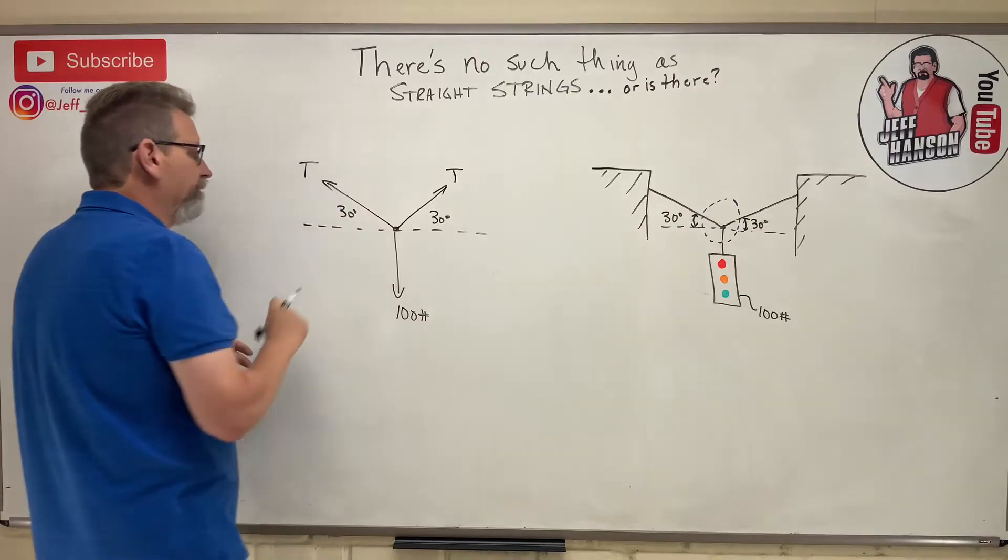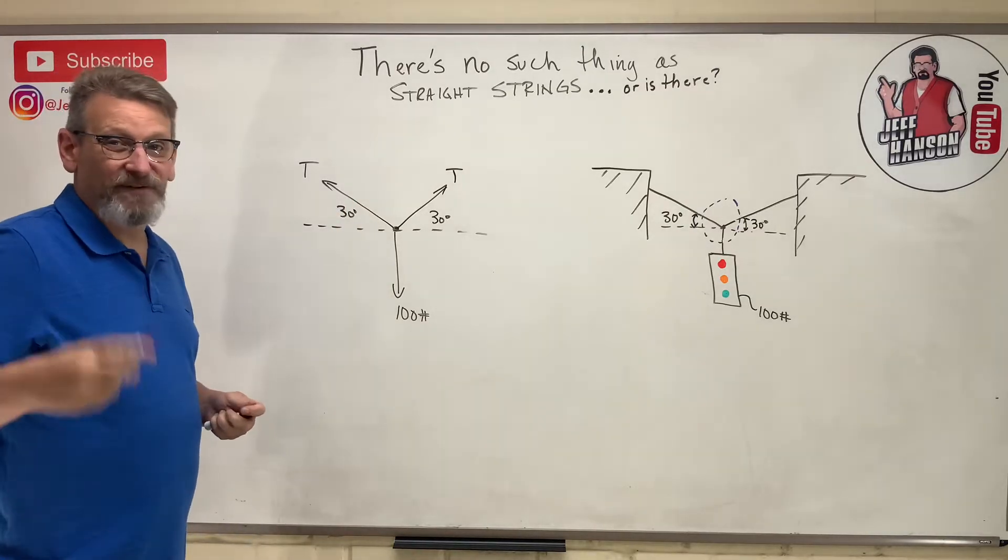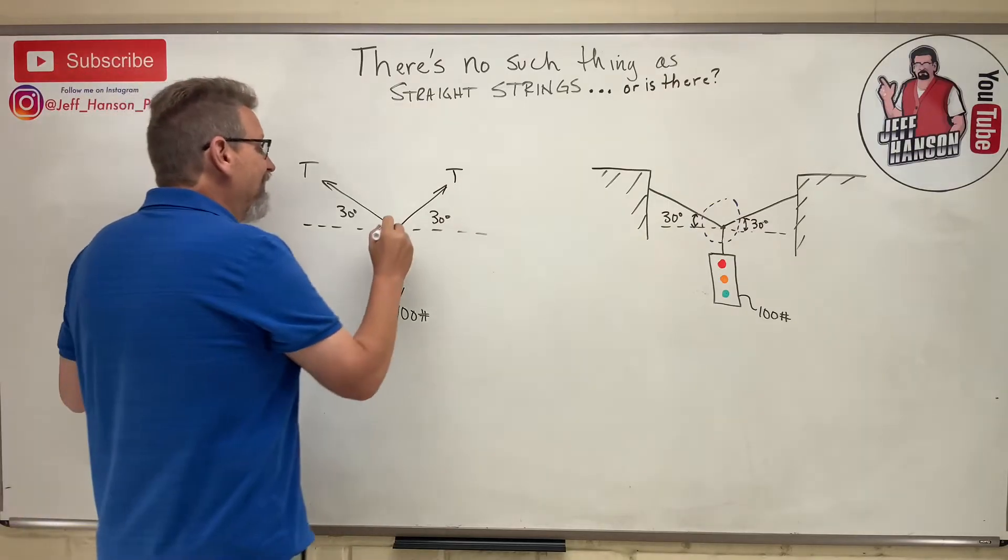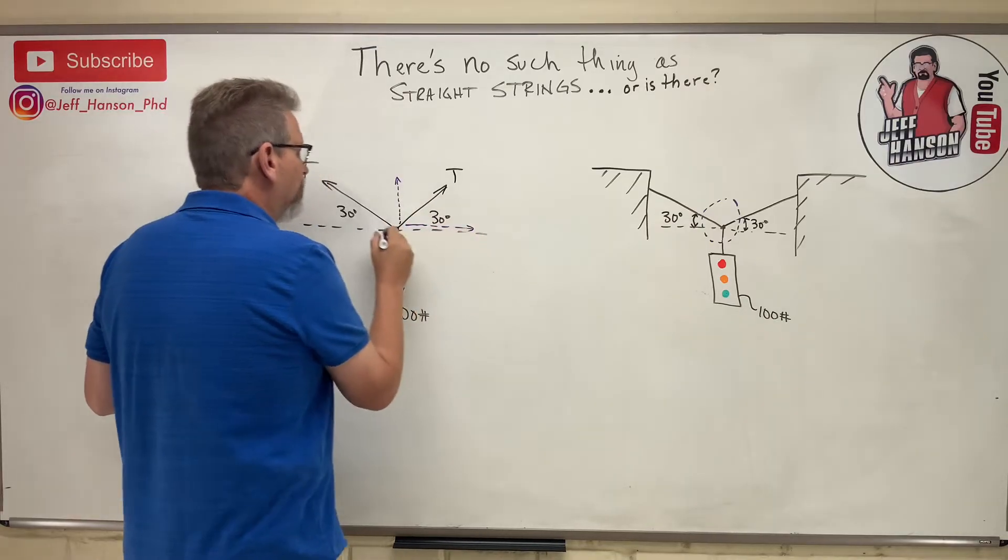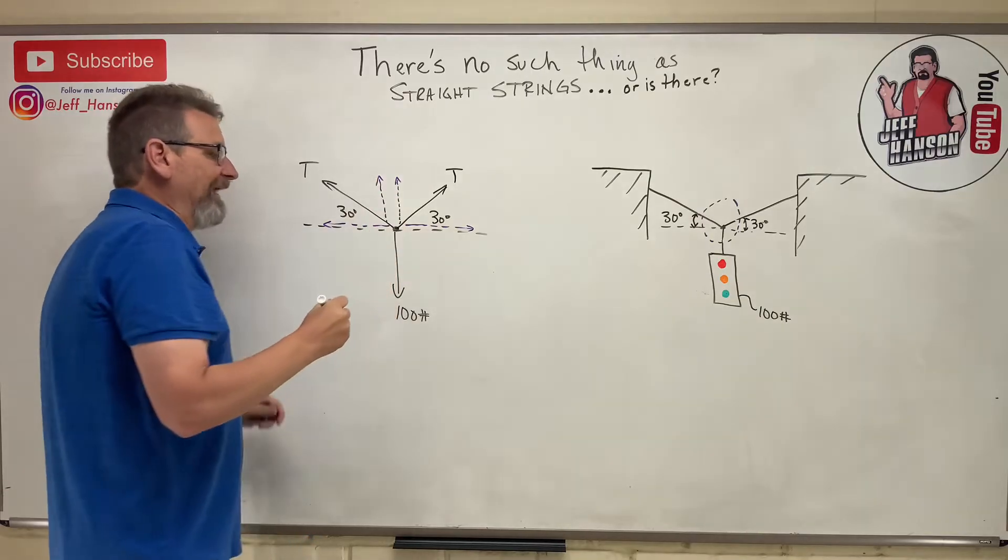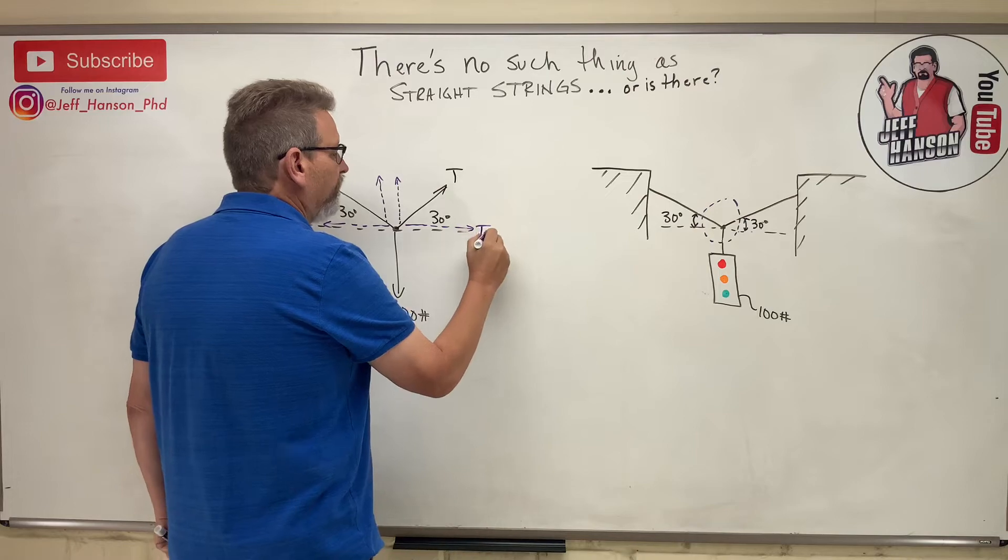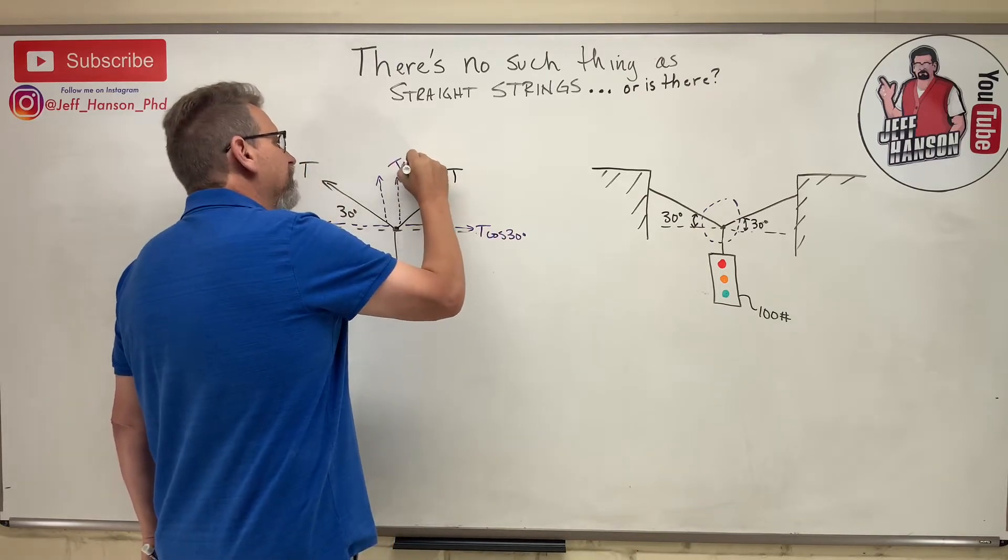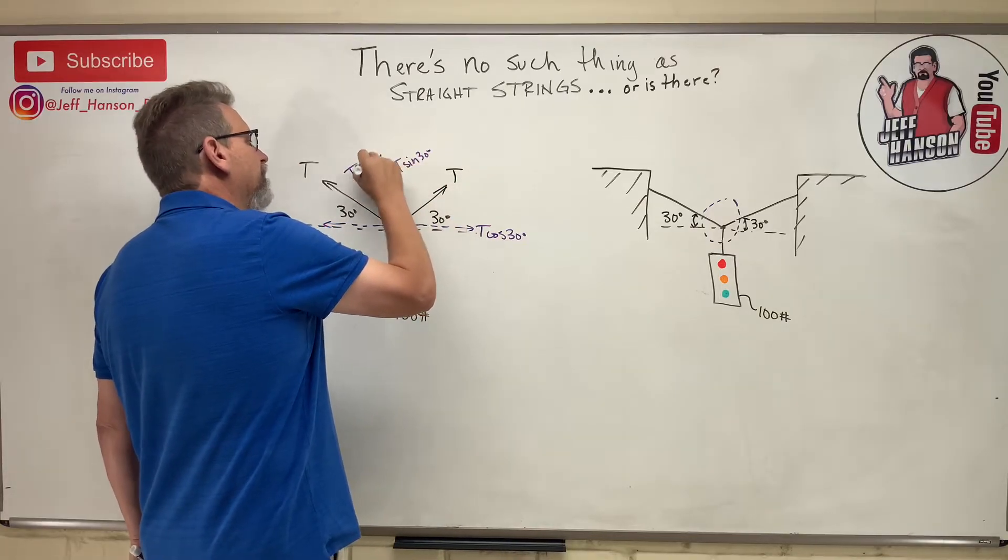Right off the bat you know that I've got some vectors at angles. In order to solve this I need to break those guys into components. I'm going to label those components: T cos 30, T sine 30, and this up here is T sine 30, and then over here T cos 30.